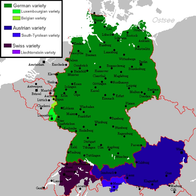Standard German originated not as a traditional dialect of a specific region, but as a written language developed over a process of several hundred years, in which writers tried to write in a way that was understood in the largest area. Until about 1800, Standard German was almost entirely a written language. In this time, people in Northern Germany who mainly spoke Low Saxon languages — very different from Standard German — learned it as a foreign language.